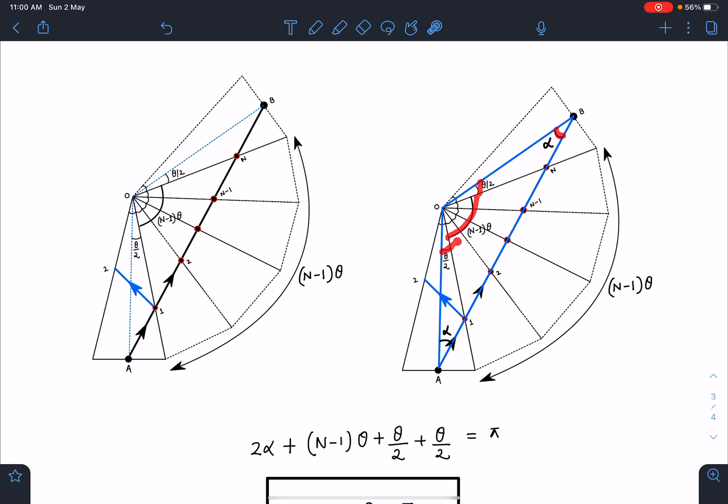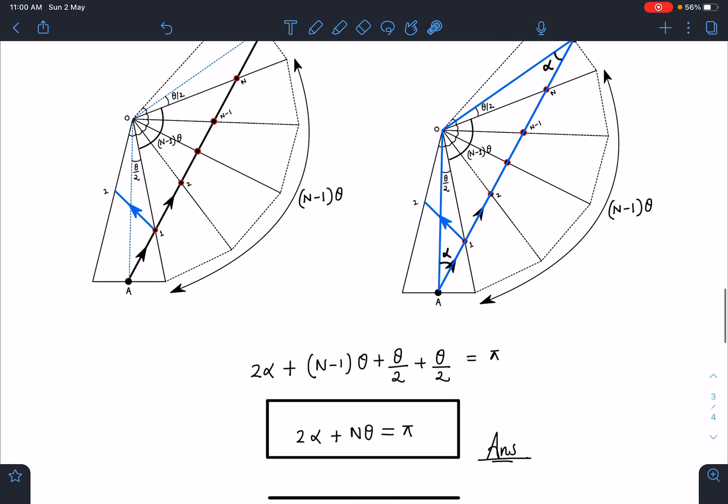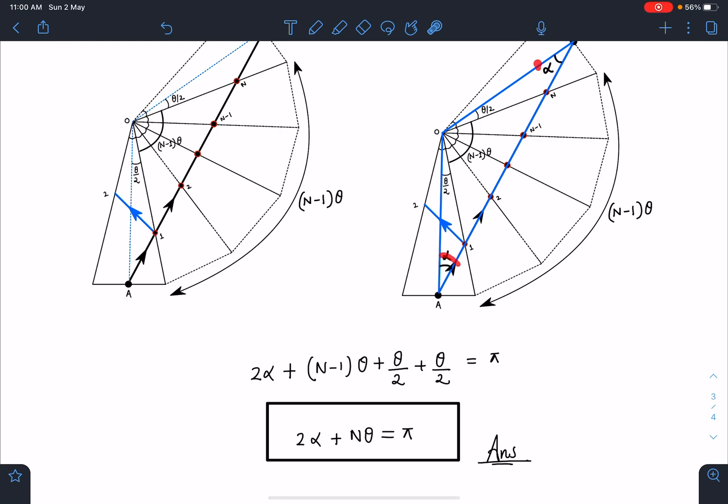So how much this total angle is going to be? Nθ it will become, right? So sum of this, this and this angle is going to be π. So 2α + (N-1)θ + θ/2 + θ/2, and that sum is going to be π. When I simplify this, I am going to get 2α + Nθ = π.